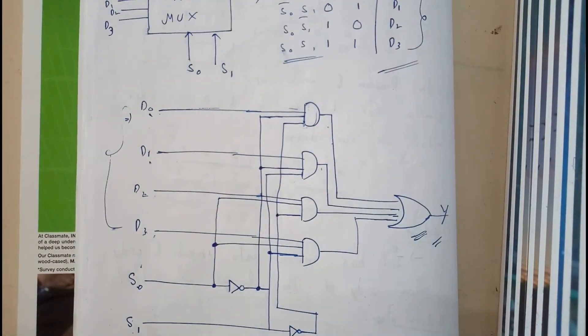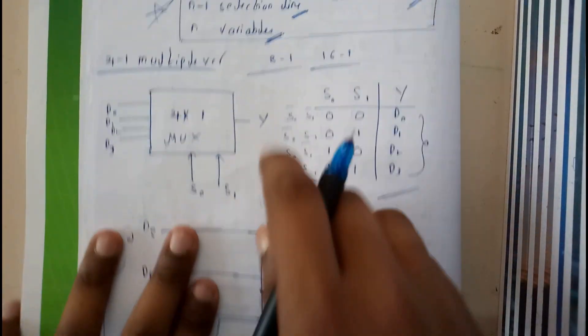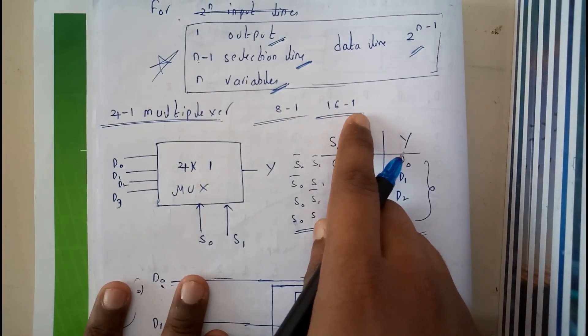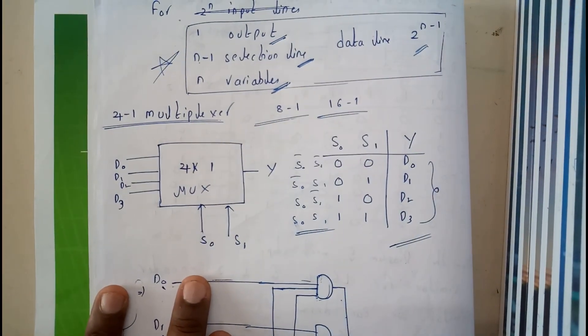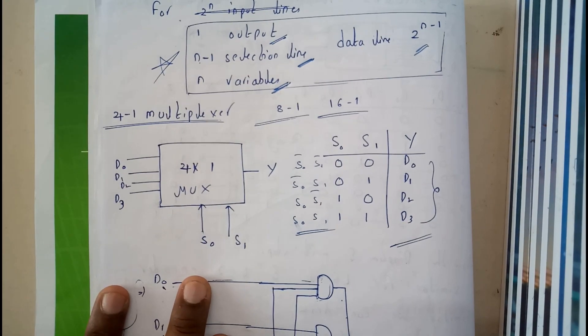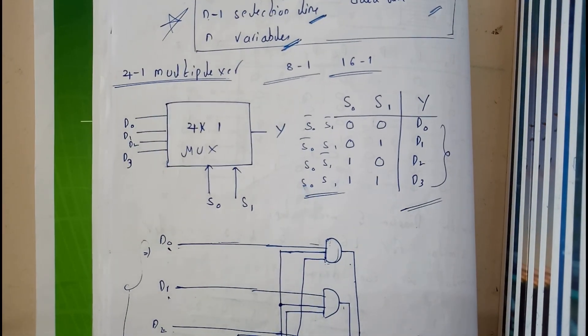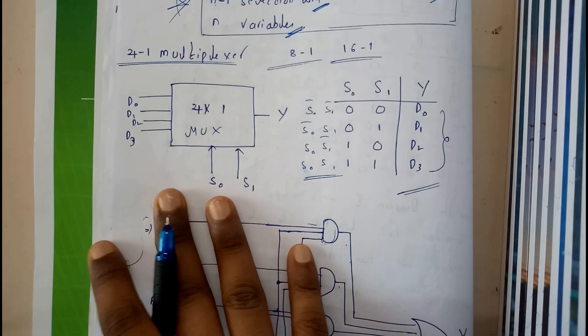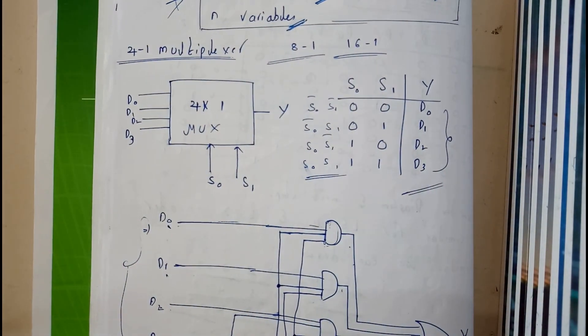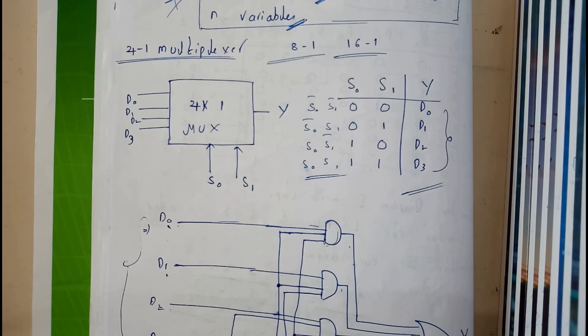So now I hope everyone is clear. Similarly you can also try for 8-to-1 and 16-to-1 multiplexers. I hope everyone can write these steps what we have done in their own words.